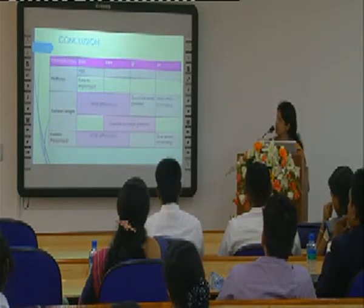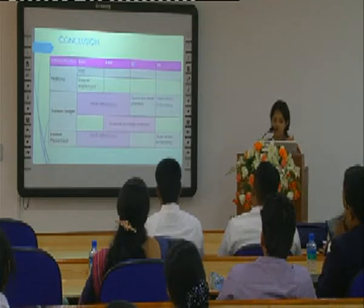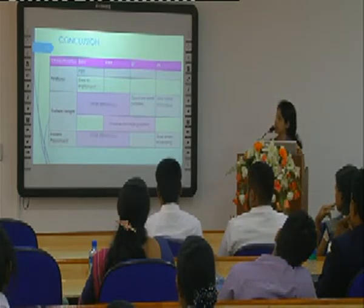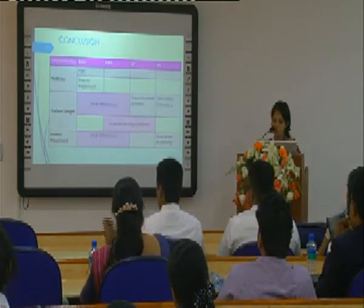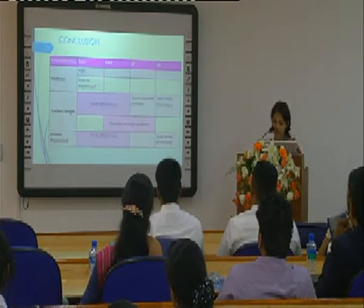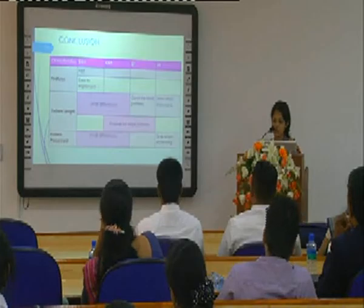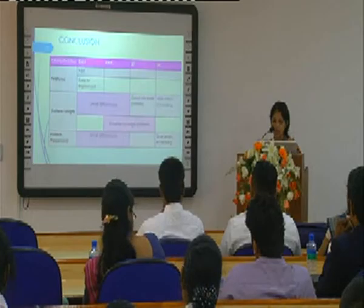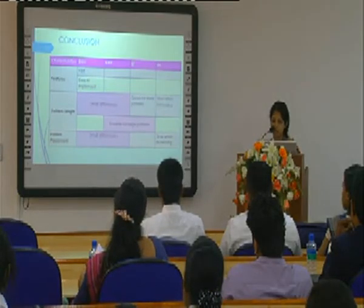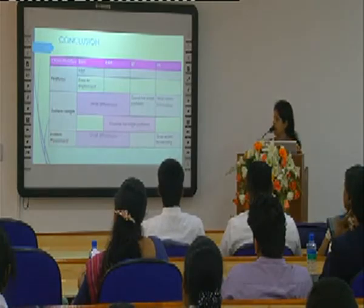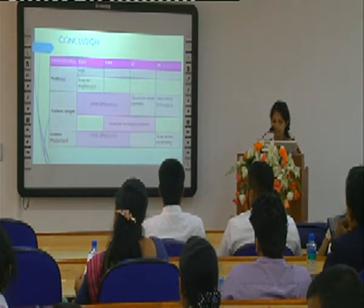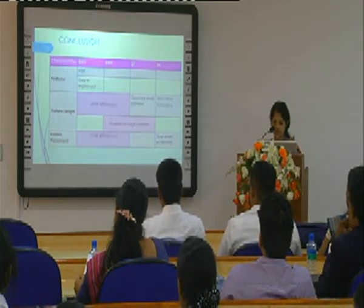In conclusion, Boyer-Moore Horspool algorithm is very fast and easy to implement. Regarding pattern length, Boyer-Moore Horspool and Knuth-Morris-Pratt show very small differences. The brute force algorithm is good for small patterns. Rabin-Karp becomes very slow as pattern length increases. Knuth-Morris-Pratt and brute force together are suitable for larger pattern lengths. For pattern placement, Boyer-Moore Horspool and Knuth-Morris-Pratt both show small differences across pattern placement positions.